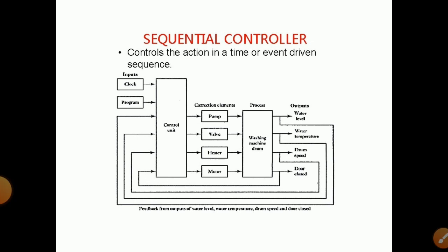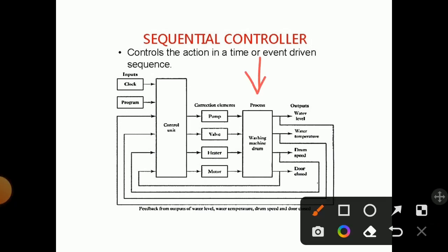Another household mechatronic application is the washing machine. All processes occur in the washing machine drum. The drum is connected with a pump, valves, a heater, and a motor — these are the correction elements. The pump is used for pumping water, valves for opening and closing, the heater for heating the water, and the motor for running the drum.